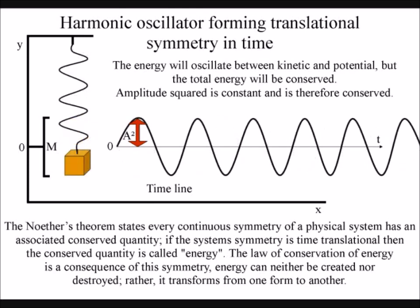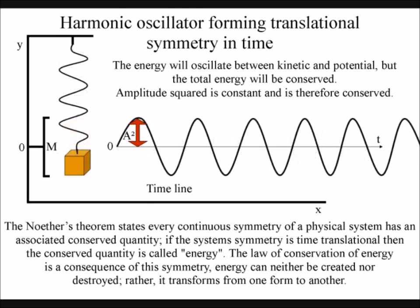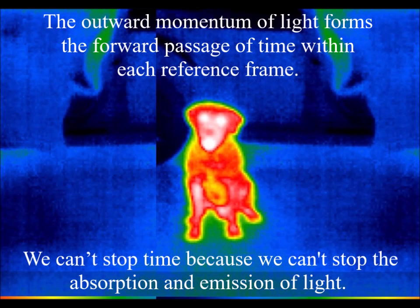Just as we have three dimensions of space forming three degrees of freedom for movement, we are also moving through time. The difference being we can stop our motion through space, but we cannot stop our motion through time.